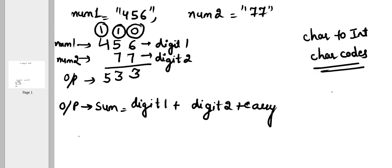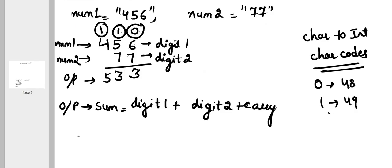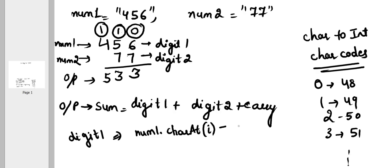So basically each integer has a character code. So 0 has character code 48 and then 1 is 49, 2 is 50, 3 is 51 up to so on. So here let's say if I have to extract the digit 1, what that would be? That would be your num1.charAt(i) minus '0'.